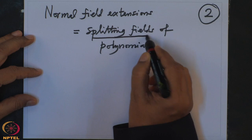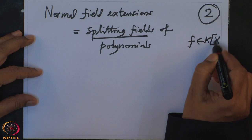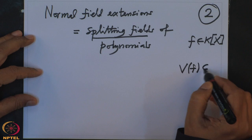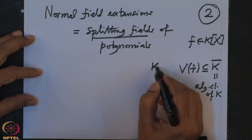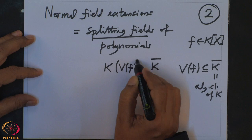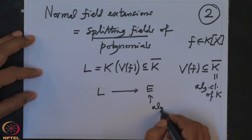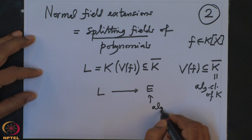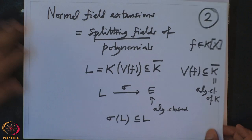The splitting field of a polynomial is: given F in the base field K, all zeros of F lie in the algebraic closure K̄ — whose existence and uniqueness we proved. Then we take the subfield of K̄ generated over K by the zeros of F. These are normal extensions, and they have the property that every embedding of L into any algebraically closed field satisfies σ(L) ⊆ L — that is the definition of normality.